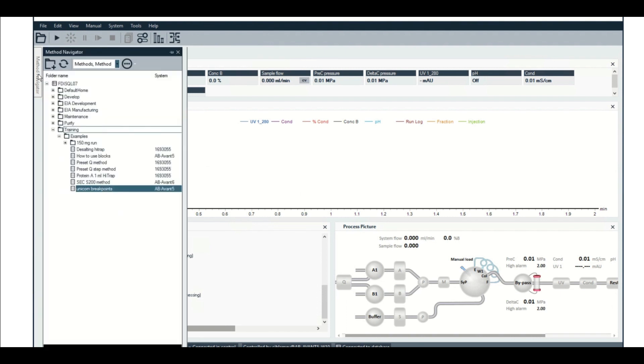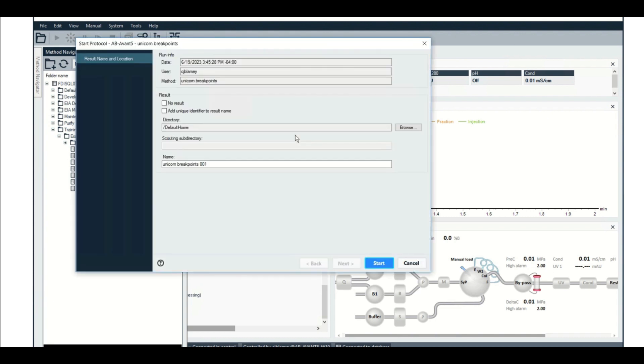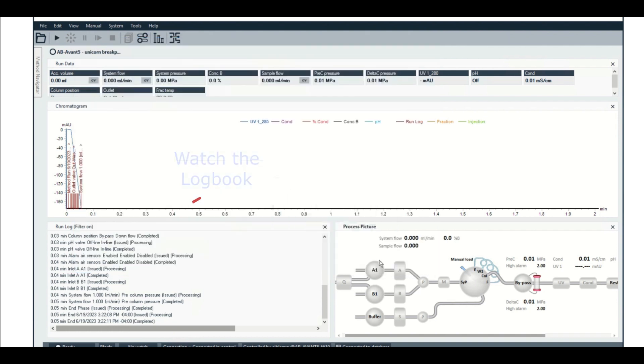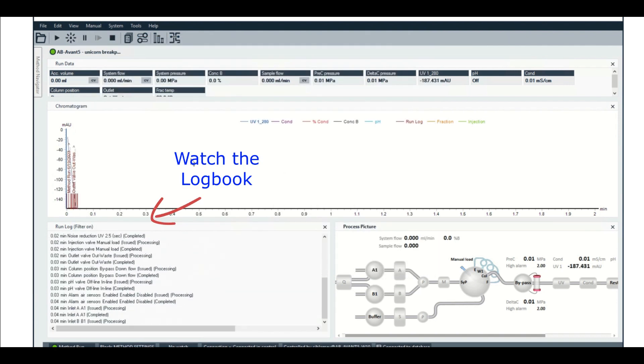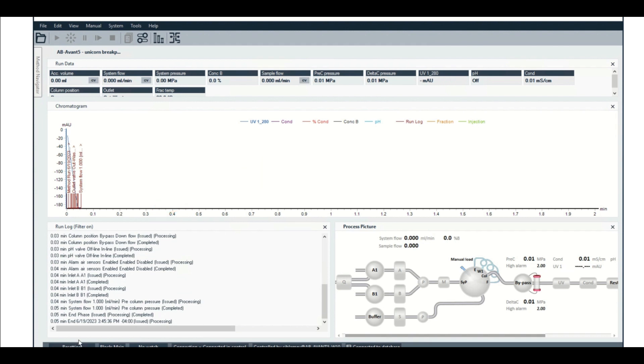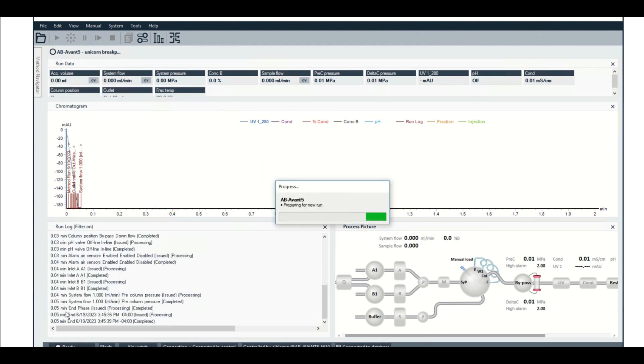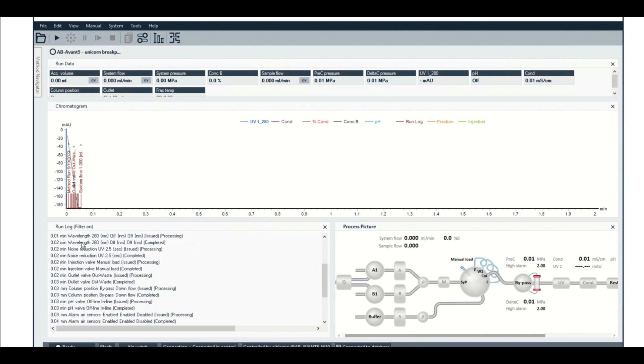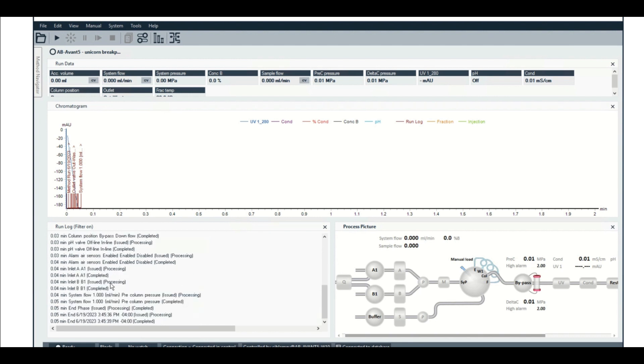All right, so here we are in Unicorn. We're going to run this Unicorn Breakpoints method. I'm not going to save a result. Start. And you'll see that it takes about three seconds. Beep boop. So here, you can see the end phase is written at 0.05. And this system flow is completed at 0.05 as well. It's issued though at 0.04. So not everything happens at the same time. It was when it's issued and completed, but not only that, in terms of the overall picture, not everything happens at once. So let's go back to the slides.